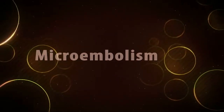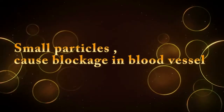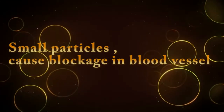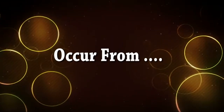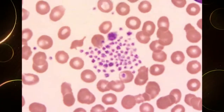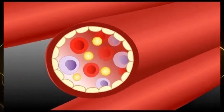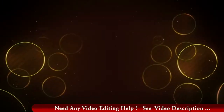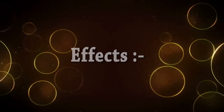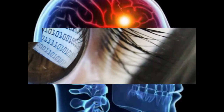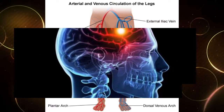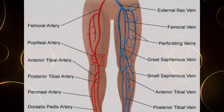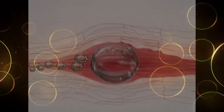A microembolism involves small particles that cause blockage in blood vessels. Microemboli are formed by platelet aggregates, atheromatous materials, fibrin, calcium, silica, and fat. The effects of microembolism include transient blindness, stroke, and peripheral vascular disease.